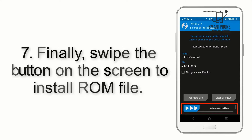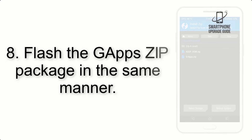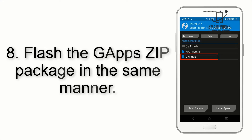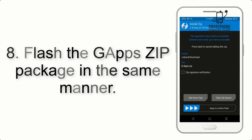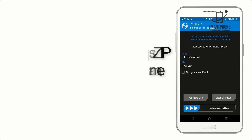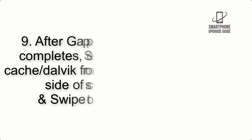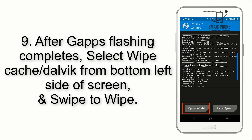Step 7: Swipe the button on the screen to install the ROM file. Step 8: Flash the GApps zip package in the same manner.